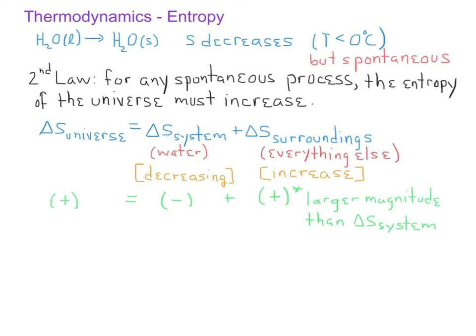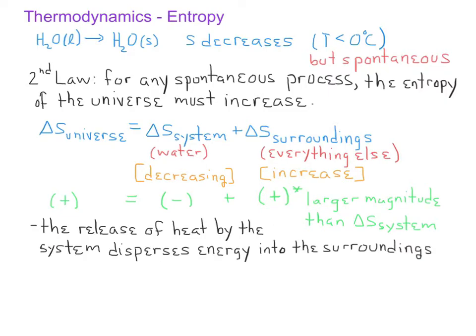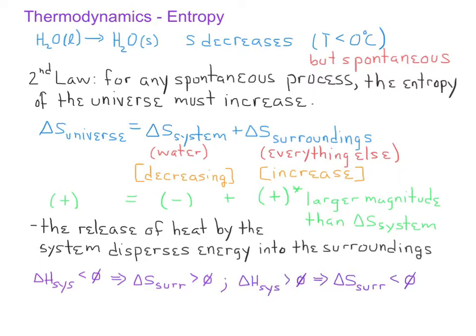Because that process is exothermic, it gives off heat to the surroundings. Since we think of entropy as a dispersal or randomization of energy, the release of heat by the system disperses that energy into the surroundings, thus increasing the entropy of the surroundings. In other words, an exothermic process increases the entropy of the surroundings, but an endothermic process decreases the entropy of the surroundings.